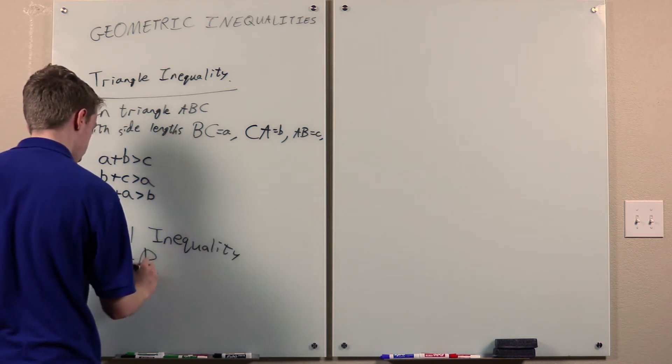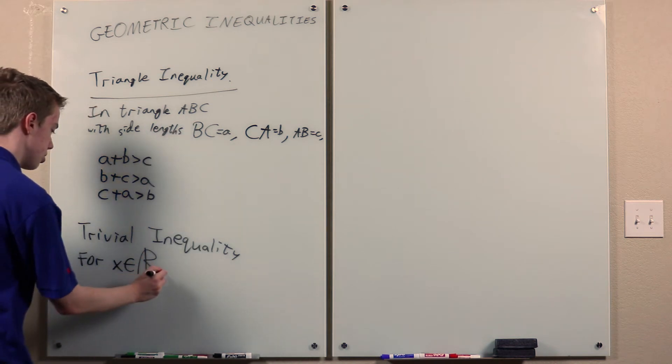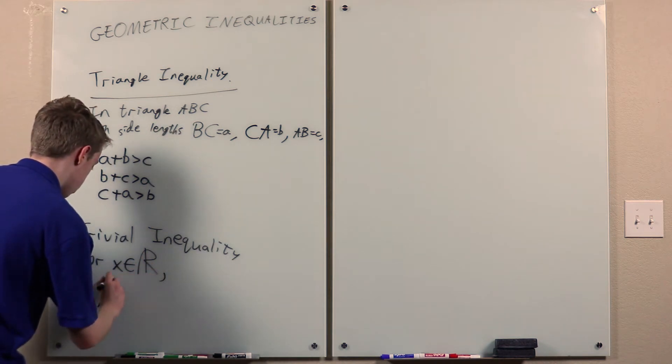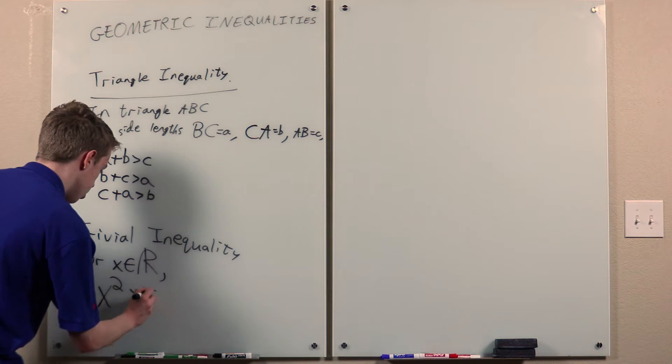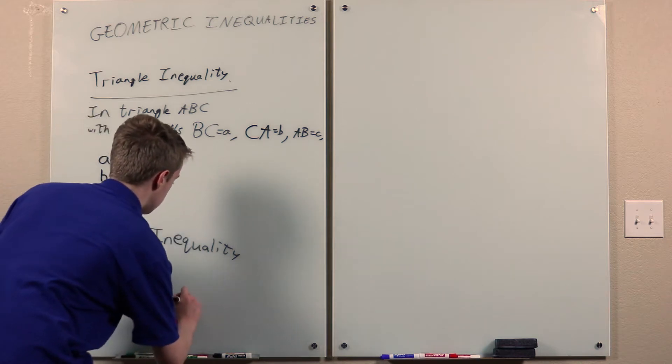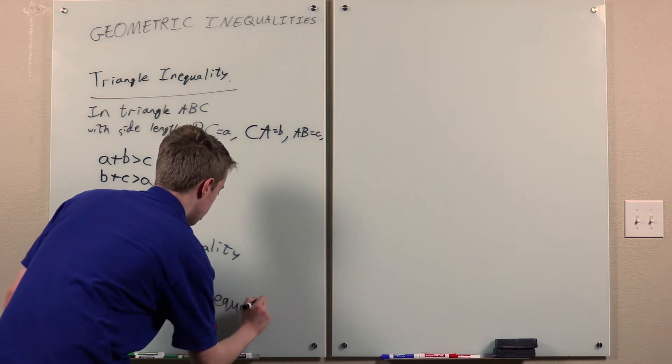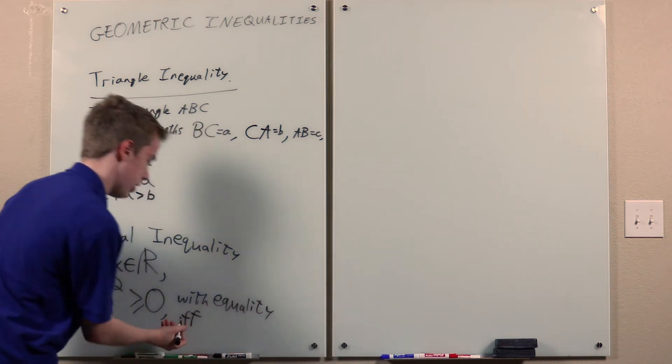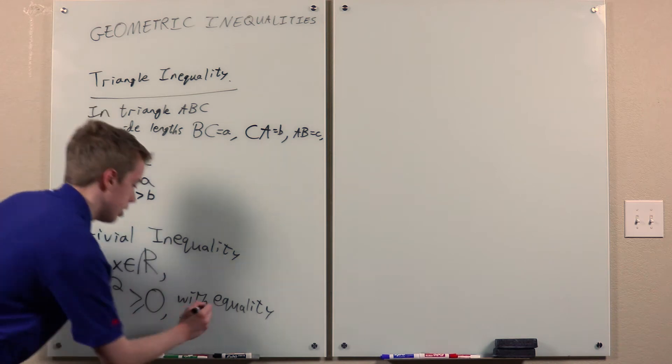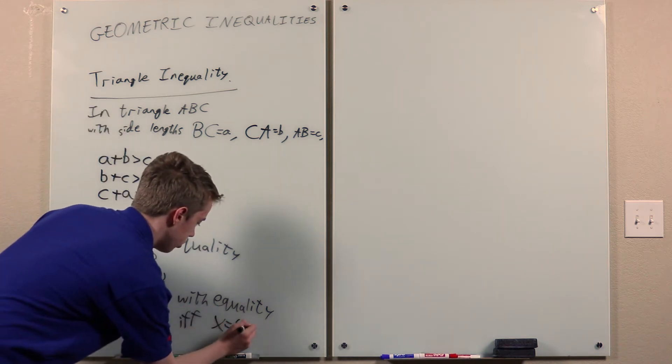It says, for a real number x, x squared is greater than or equal to 0, with equality if and only if x equals 0.